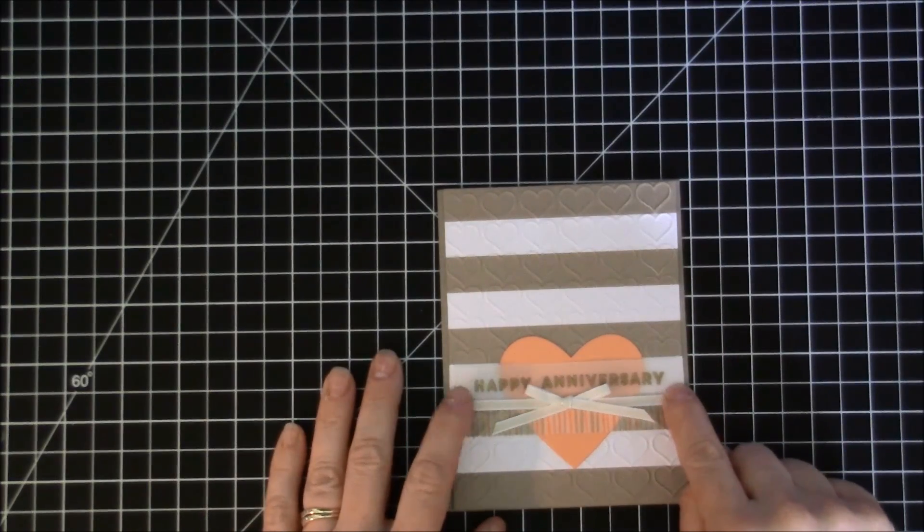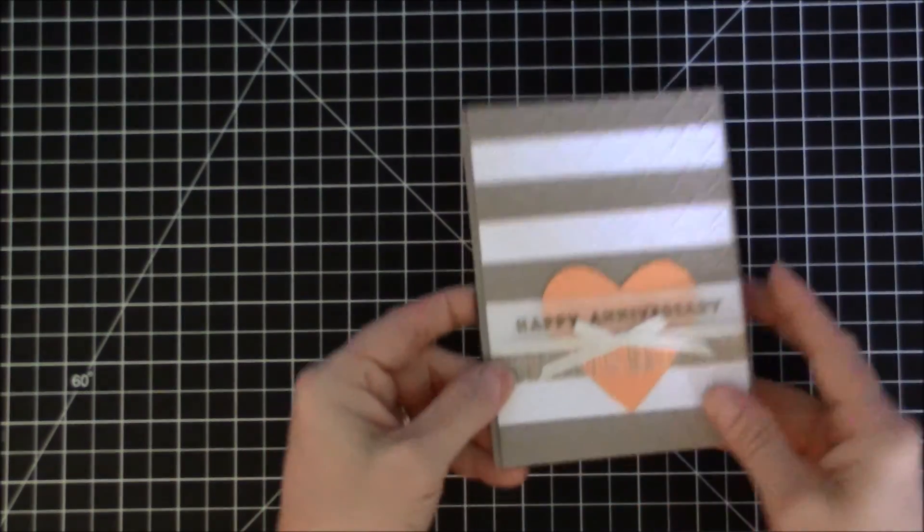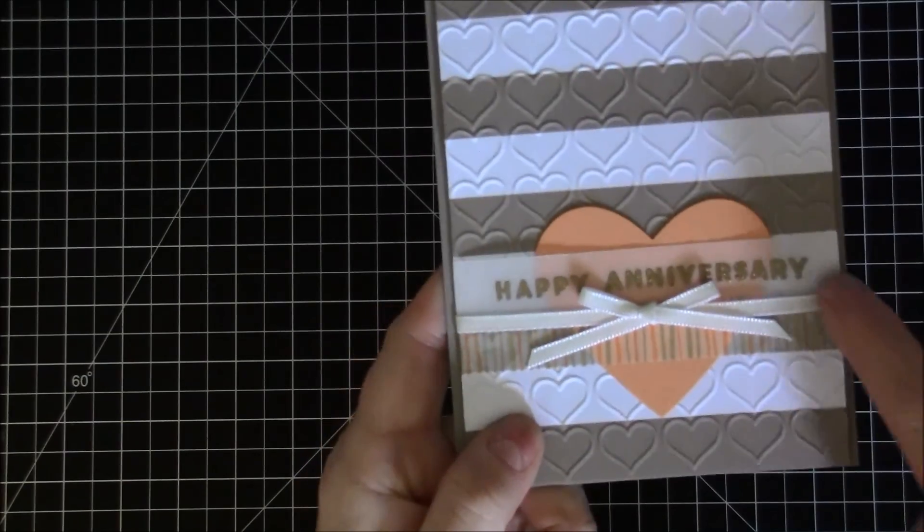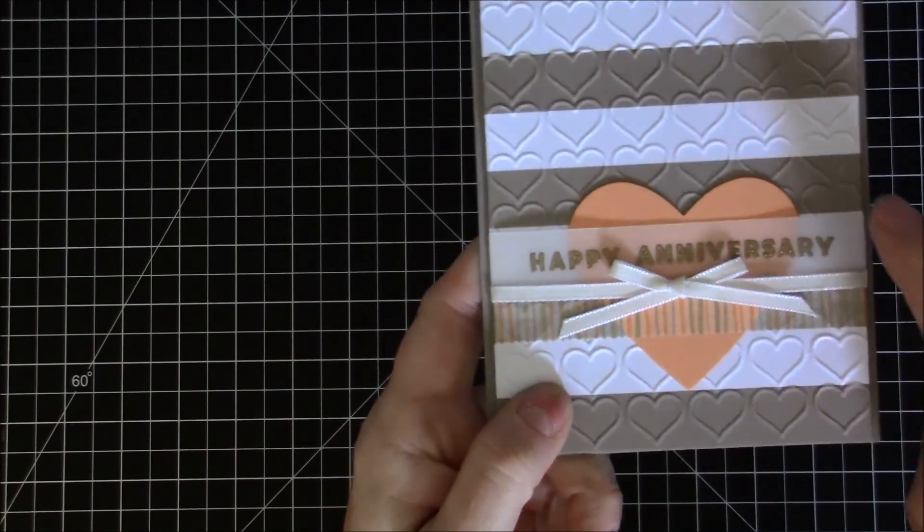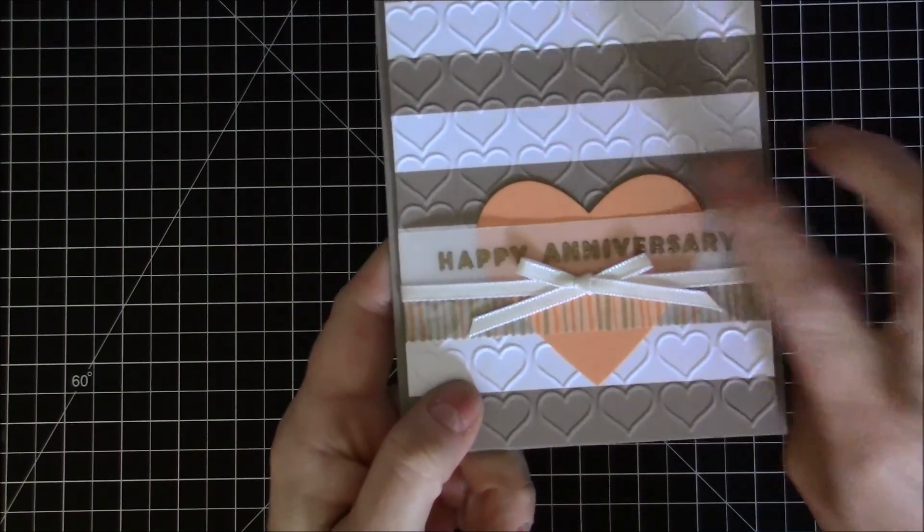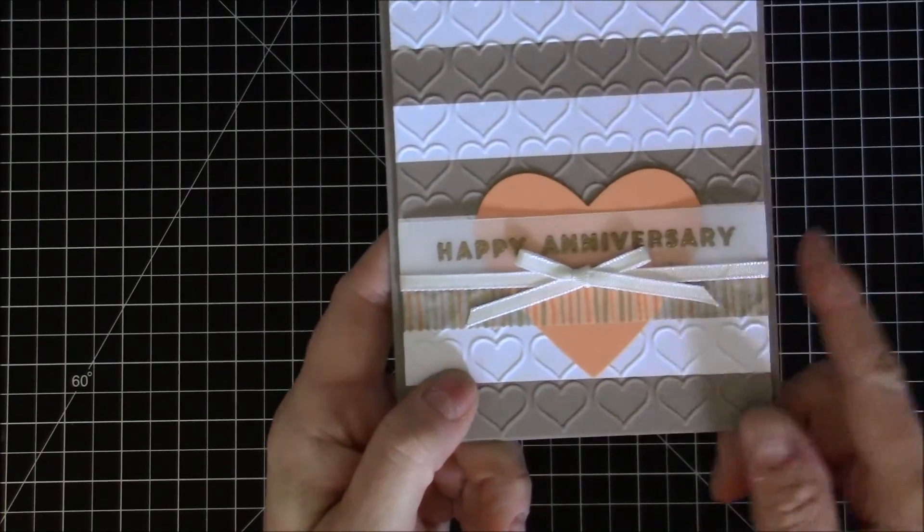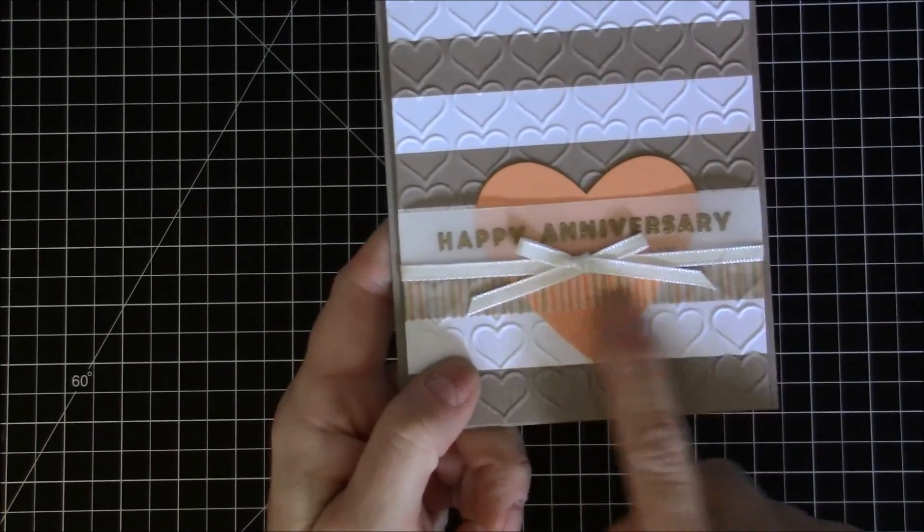And then I stamped my sentiment on vellum and did gold embossing, and then I used one of the new in colors, the peekaboo peach, to make a heart from my heart dies.